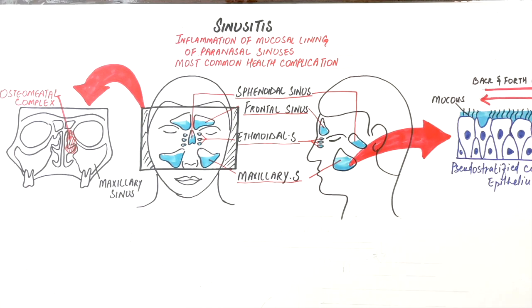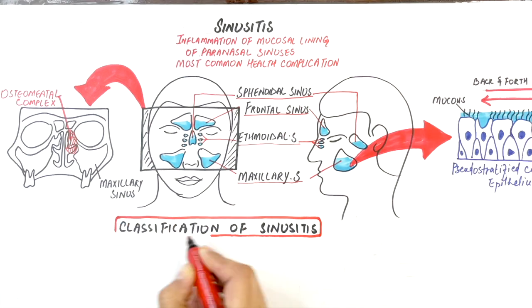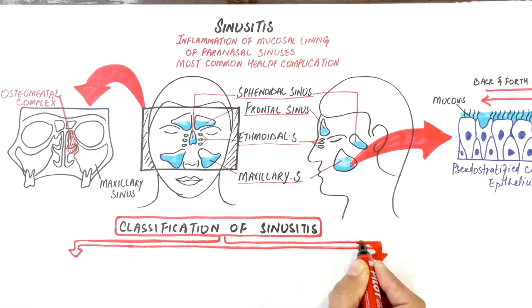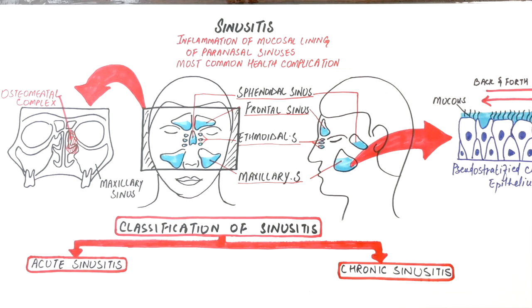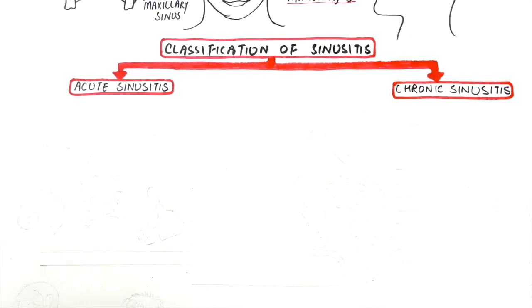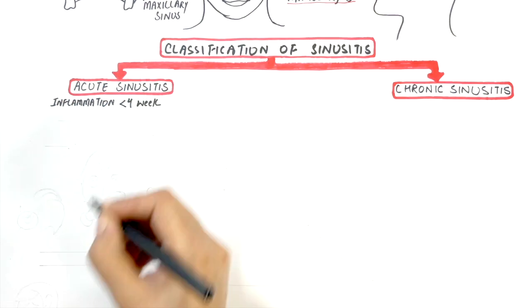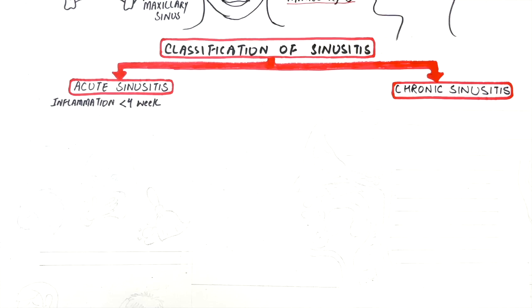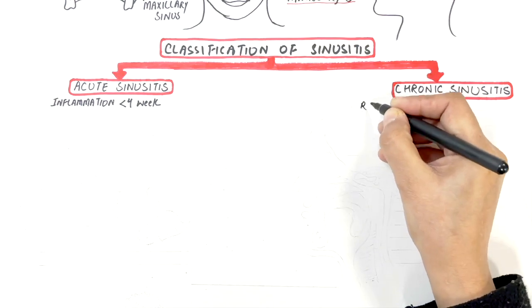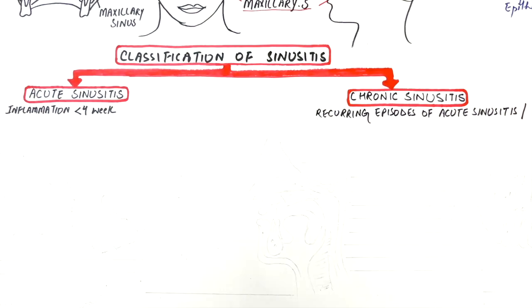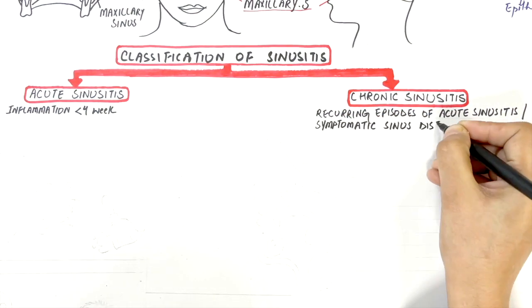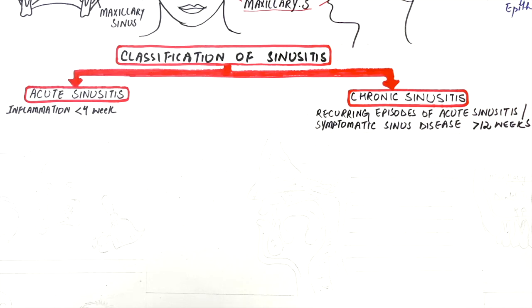Sinusitis can be classified as acute or chronic. Acute sinusitis is defined as inflammation of the mucosal lining of the sinuses for less than 4 weeks duration. Chronic sinusitis is defined as recurring episodes of acute sinusitis or symptomatic sinus disease lasting longer than 12 weeks, and can continue for months or even years.